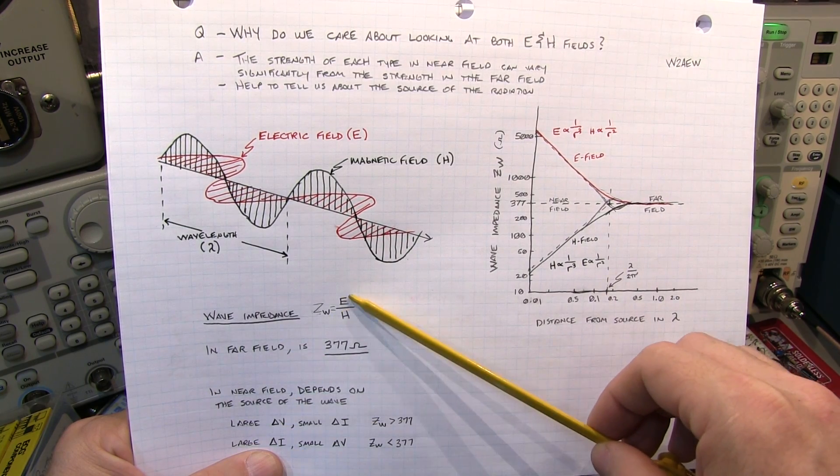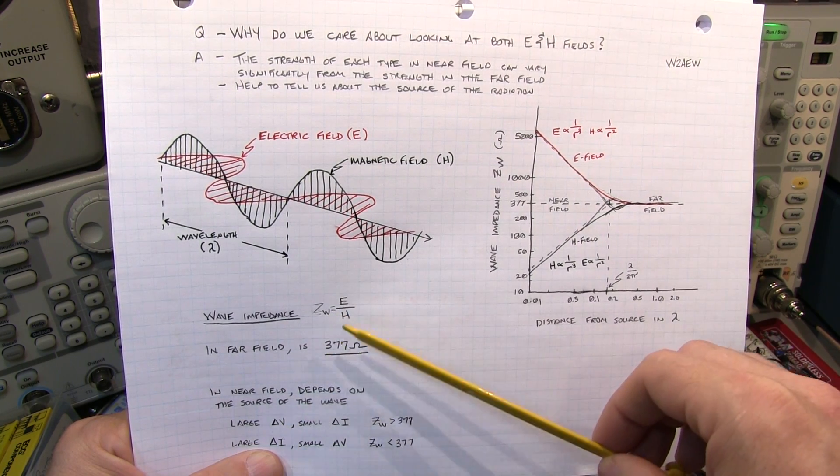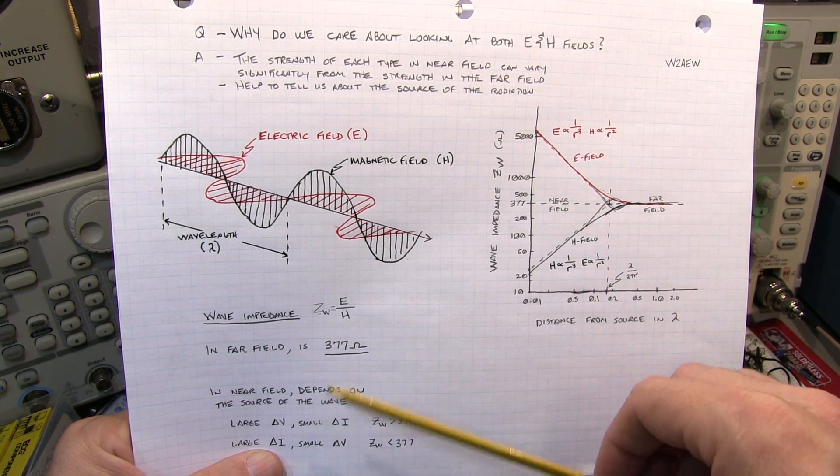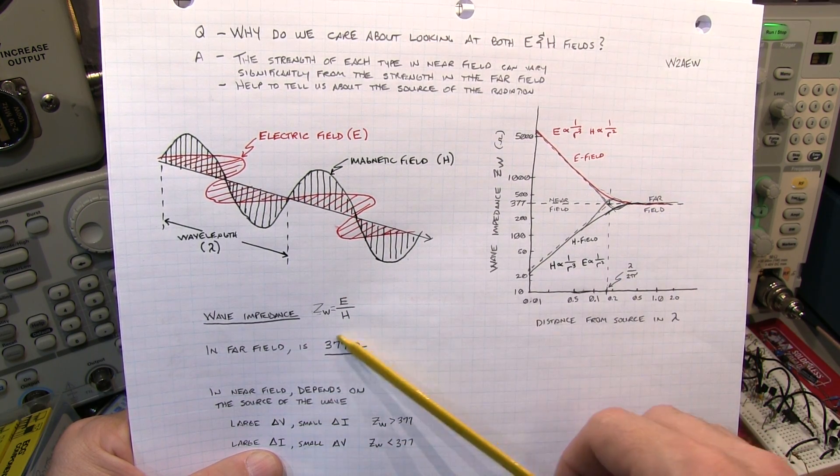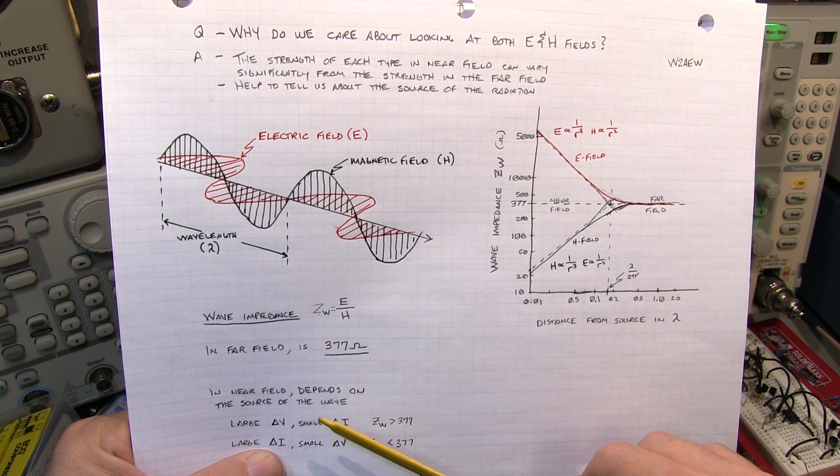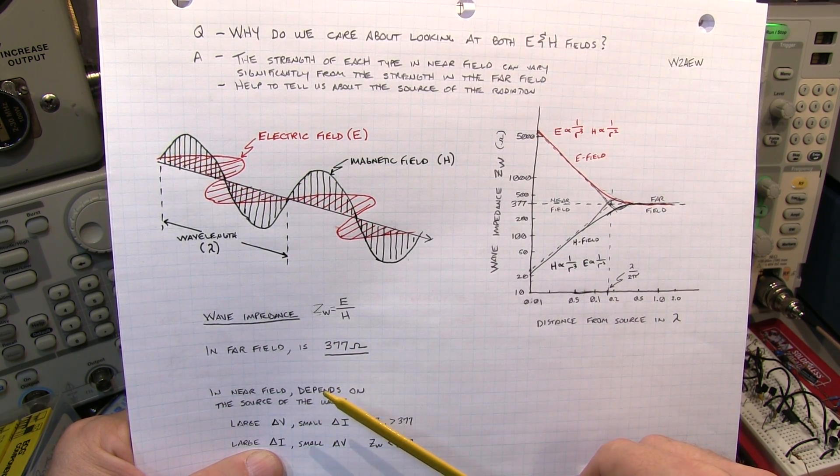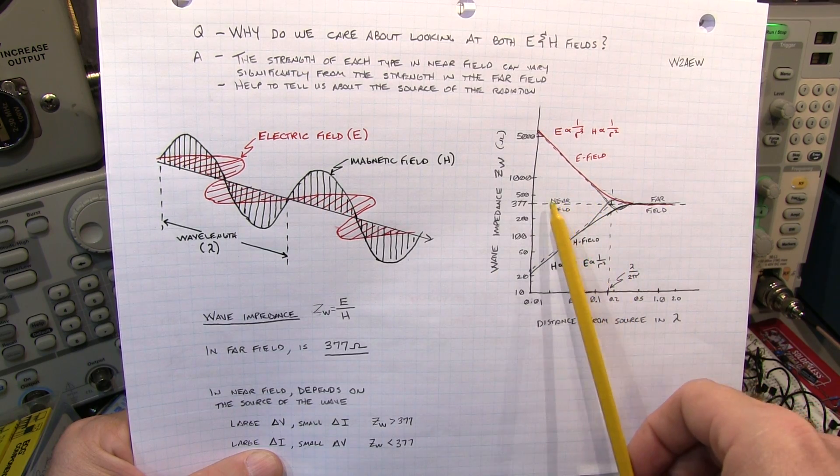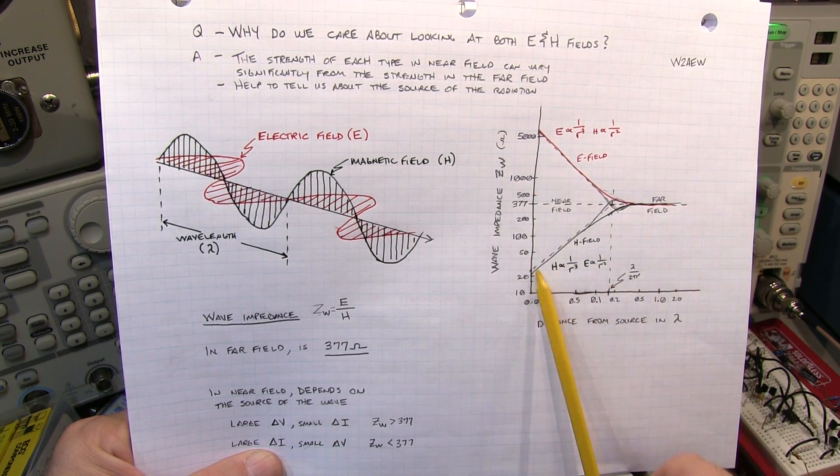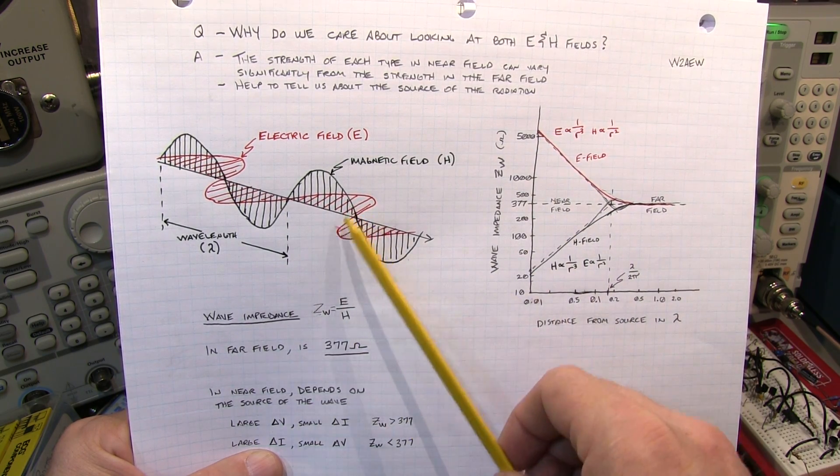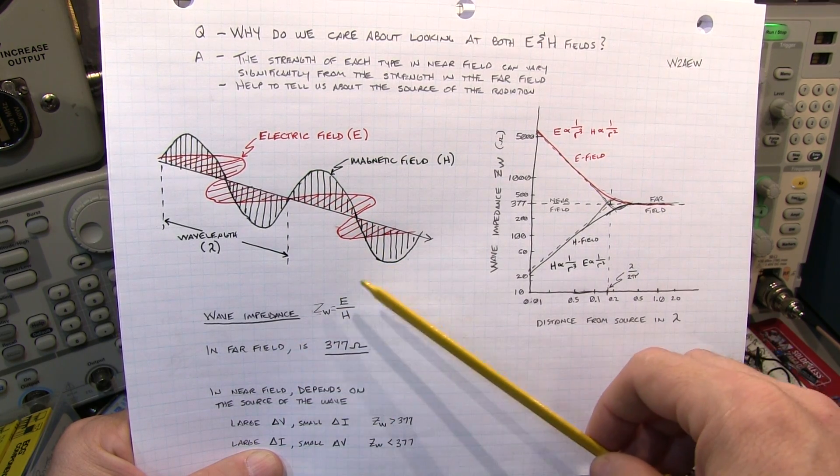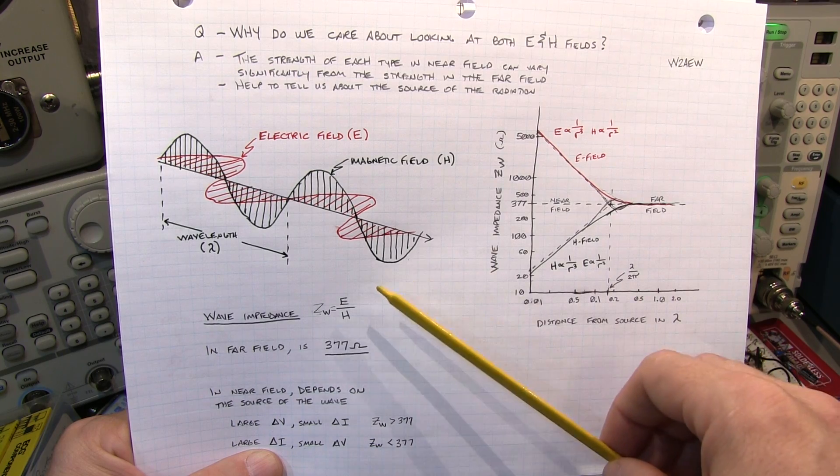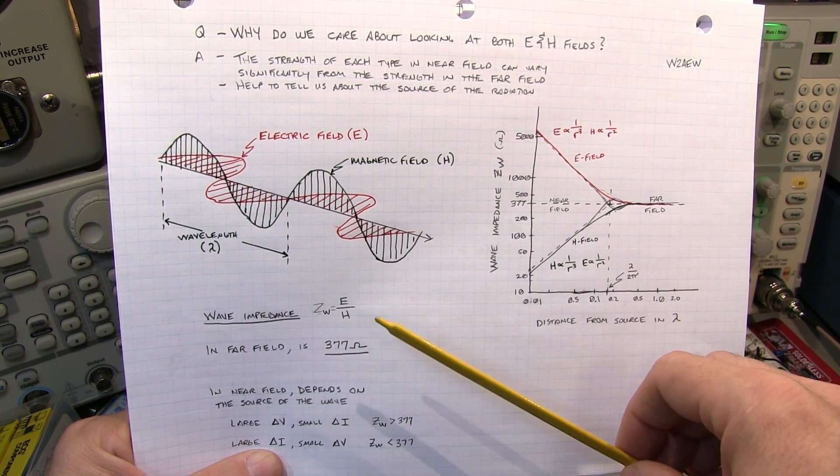And just like in Ohm's law, it's the voltage or E field divided by the current or H field. So in the far field, in free space, that relationship is 377 ohms. That's effectively the impedance of free space. However, when you get closer and closer to the circuit itself, the wave impedance is more dictated by the circuit impedance, whether that field is created primarily by a large current change or a large voltage change.